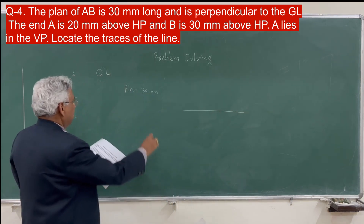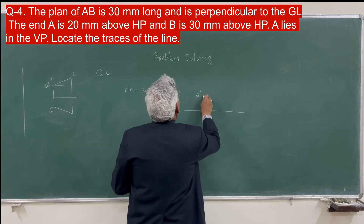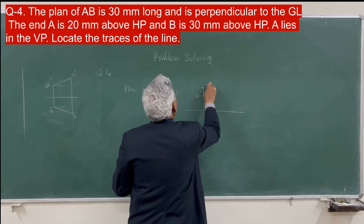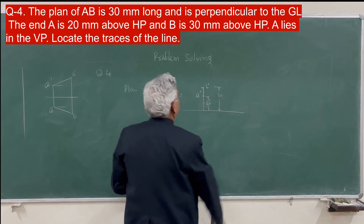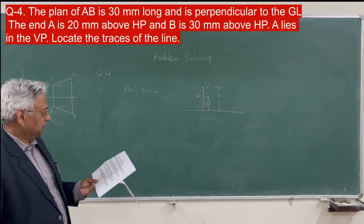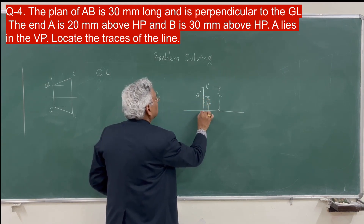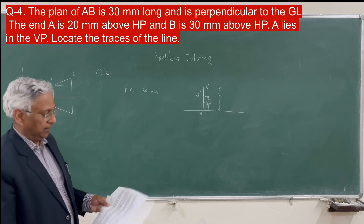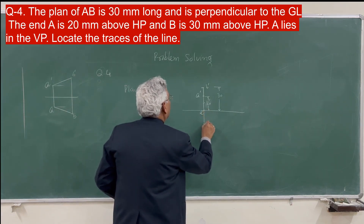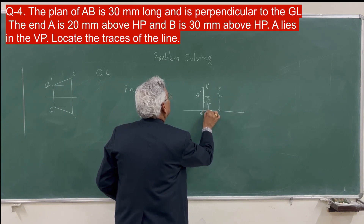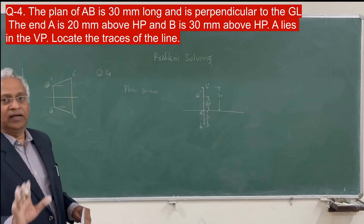A is above HP by 20 millimeters, so A dash is here. B is here. The line lies in the vertical plane, which means its plan will be on the ground line. Because the plan of the line is 30 millimeters long, you can take AB perpendicular to the ground line — 30 millimeters. These are the projections of the line when it is in the profile plane, satisfying the given conditions.